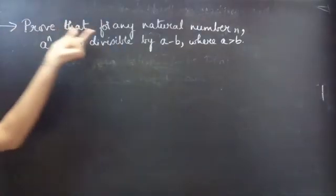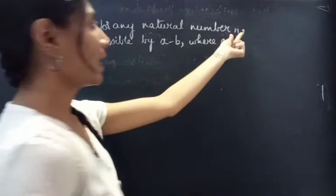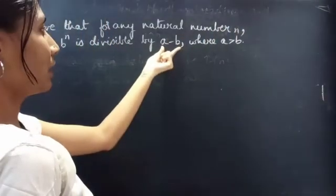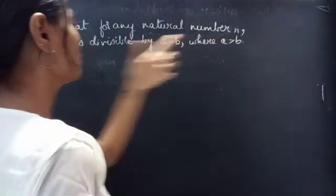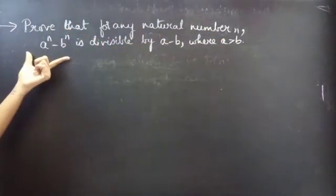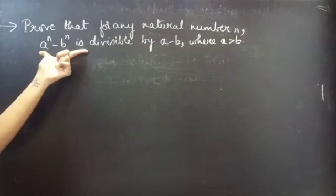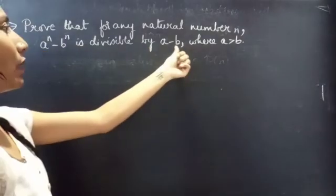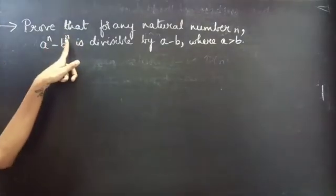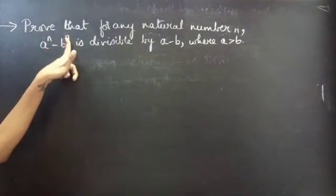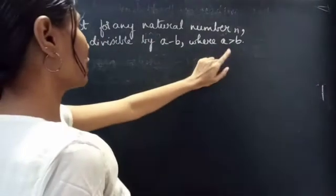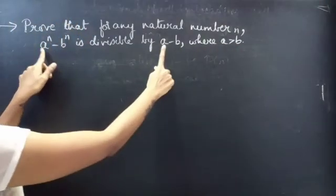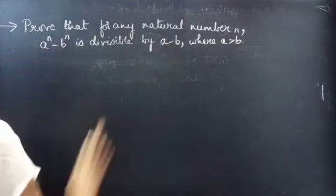Problem: prove that for any natural number n, a power n minus b power n is divisible by a minus b, where a is greater than b.